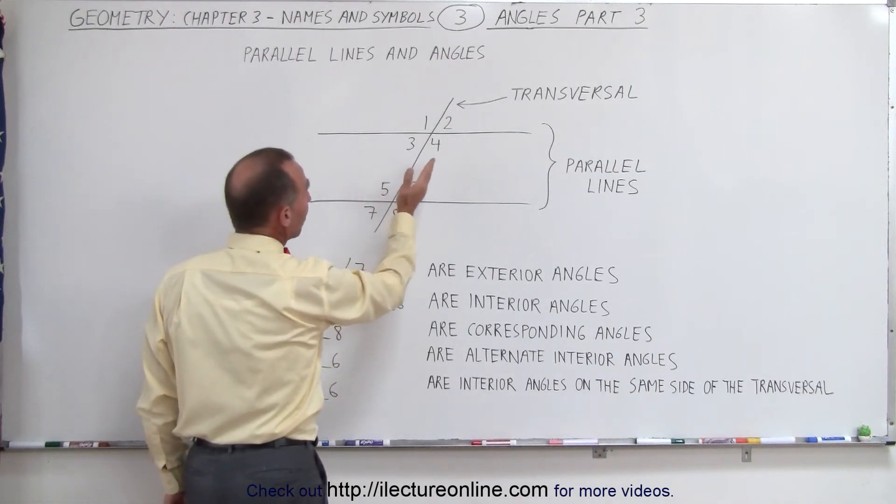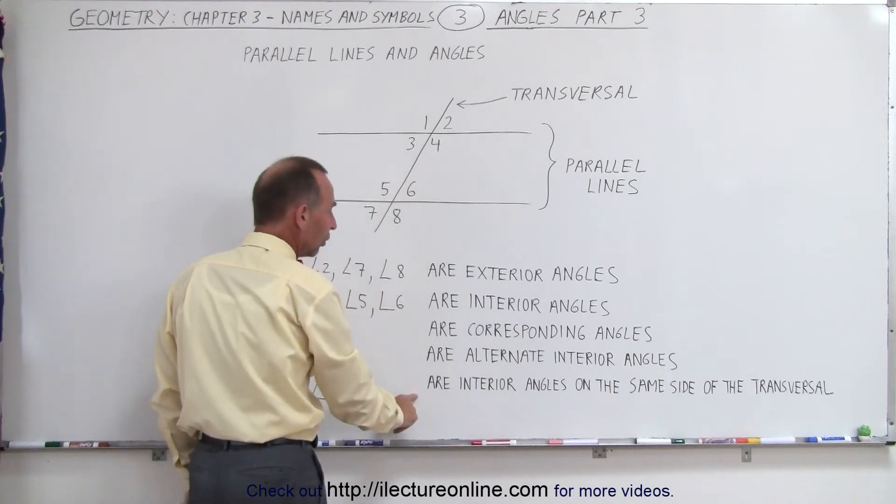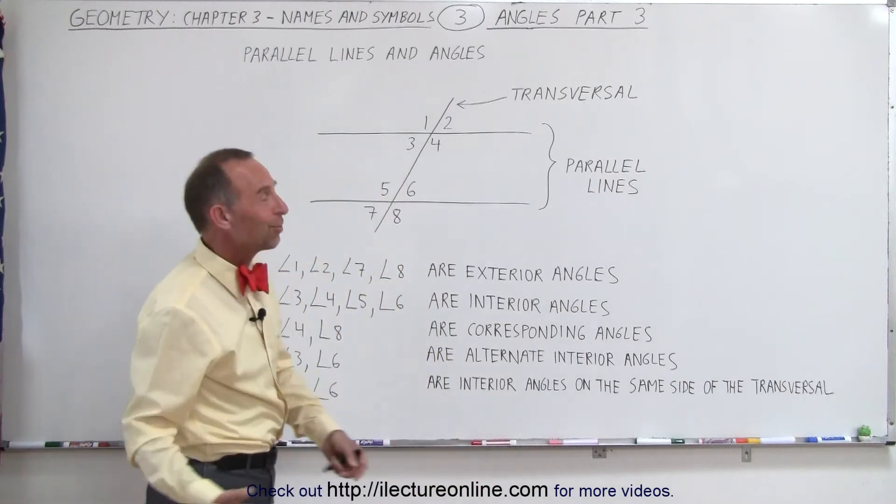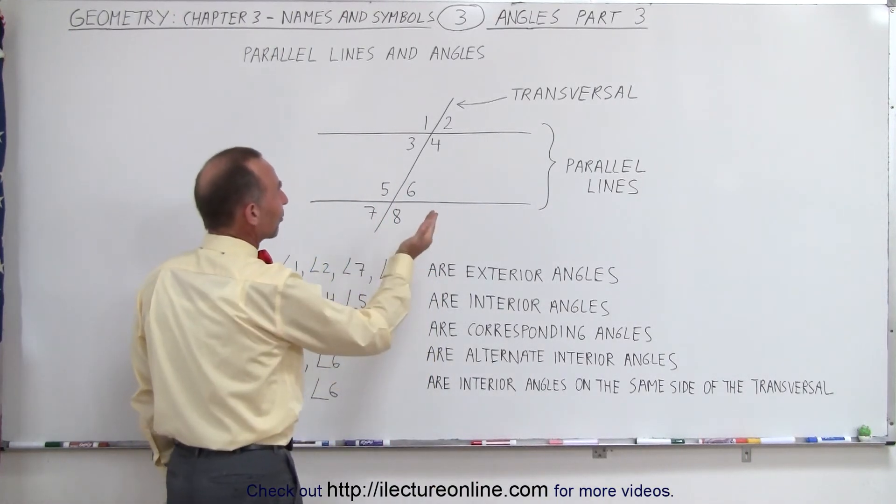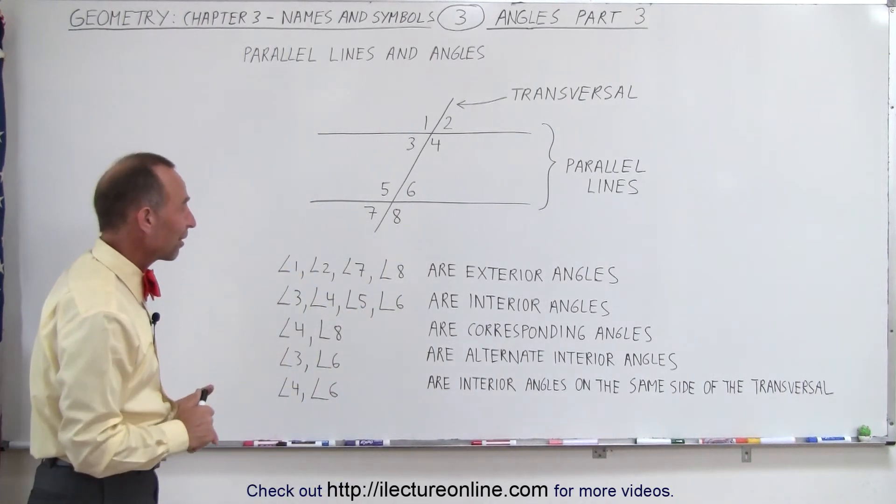They're on the same side as the transversal. They're interior angles. So four and six are called interior angles on the same side of the transversal. That seems straightforward enough. They're interior angles on the same side of the transversal.